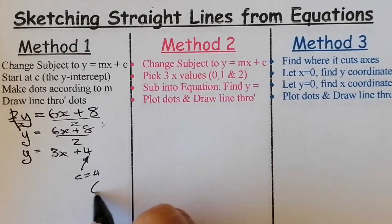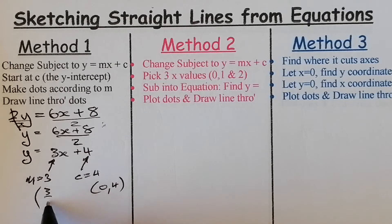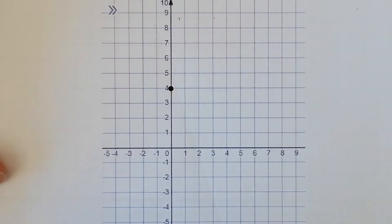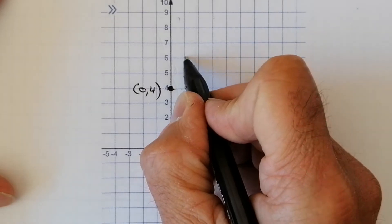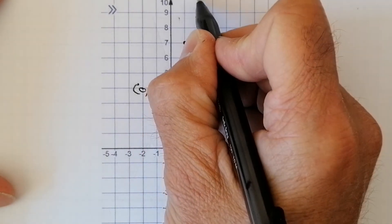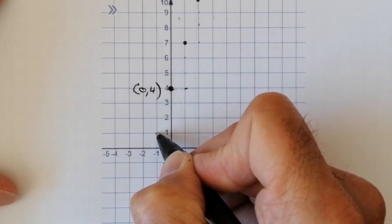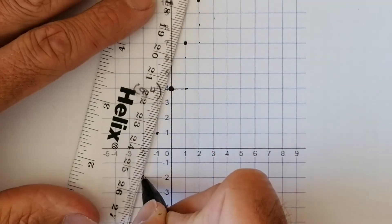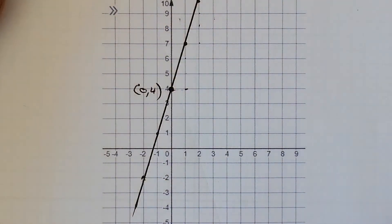Now I have y equals 3x plus 4 in the right form. c equals 4, giving starting point (0, 4), and gradient equals 3, meaning along 1 and up 3 each time. Plotting (0, 4) and then going along 1, up 3 gets me off the chart quickly, so I can also go along 1 and down 3 in the other direction to extend the line downward, joining all the points to sketch the line.